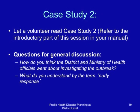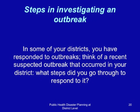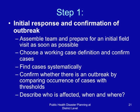Steps in investigating an outbreak. Step one: initial notification, response, and confirmation of the outbreak — it is important to assemble a team and prepare for an initial field visit as soon as possible. Step two: choose a working case definition and confirm cases. Step three: find cases systematically. Step four: confirm whether there is an outbreak by comparing occurrence of cases with the thresholds. Step five: describe who is affected, when, and where.